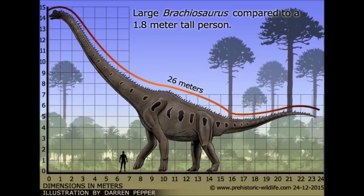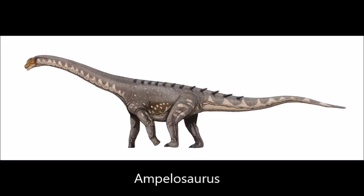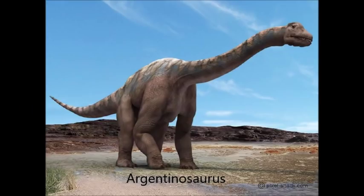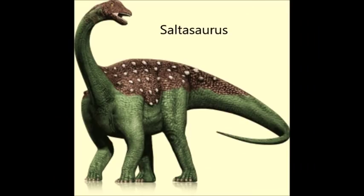On the other side of the divide is Macronaria, named for their huge nasal openings, which is home to the famous Brachiosaurus, as well as the Titanosaurs. Titanosauria existed throughout the Cretaceous, although their biodiversity is predicted to have begun in the Jurassic. This clade contains some famous members who hail from South America, including Argentinosaurus and Saltasaurus, the latter of whom possessed osteoderms. Although these features are often assumed to function as armor, they were too small and too few to serve for that purpose. In 2011, Rogers et al. proposed that Titanosaurs used these osteoderms to store minerals.